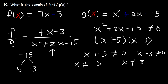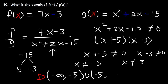So x is all real numbers except those two values. To write the answer using interval notation: negative infinity to negative 5 — meaning x can be anything from negative infinity up to but not including negative 5 — union negative 5 to 3 (not including either endpoint), and then union 3 to infinity, meaning x can be anything greater than 3. So that's the domain of f divided by g.